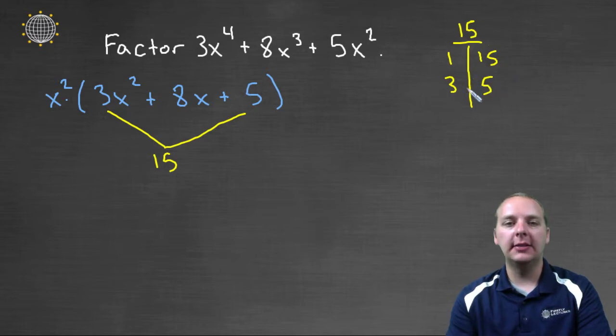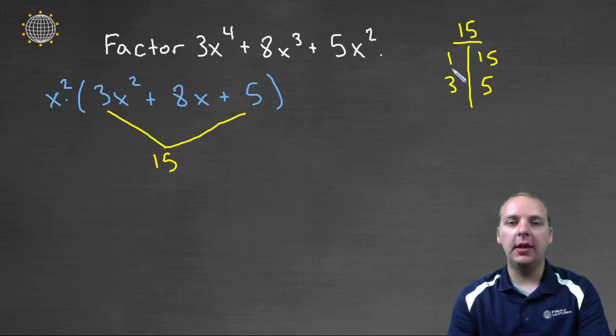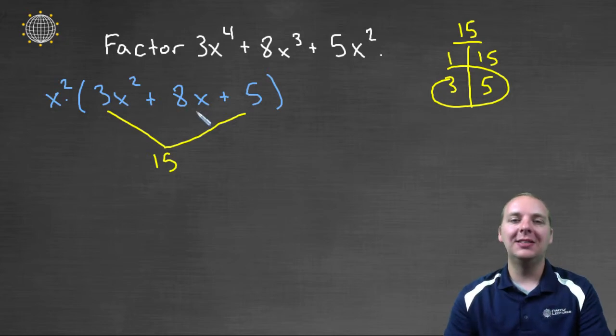And then I'm going to scan this list, I'm going to see if any of those could add up to an 8x, or an 8. And in fact the 3 and the 5 could add to 8. So what I'm going to do to this 8x, is I'm going to separate it into 3x plus 5x.